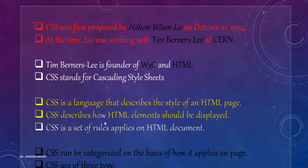CSS describes how HTML elements should be displayed. CSS is a set of rules which applies on HTML elements — how the HTML tag or HTML elements look. We can color different HTML tags, we can design images, we can design web pages. By using CSS, we can change the look and feel of a particular HTML tag. We can set the rules for how the HTML tag will look — we can describe that inside the CSS.